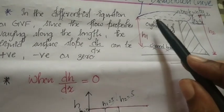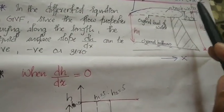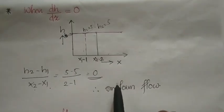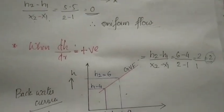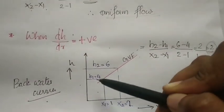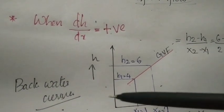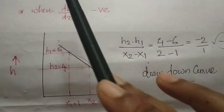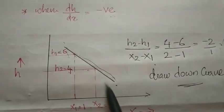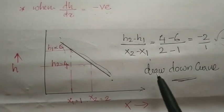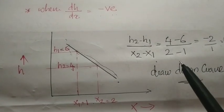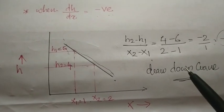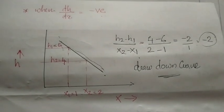The profile of rising water on the upstream side of a dam is called the backwater curve. When dh/dx equals zero, depth is constant and flow is uniform. When dh/dx is positive, water rises on the upstream side of the dam — that profile is called the backwater curve. When dh/dx is negative, the depth decreases in the direction of flow — that profile is the drawdown curve. A drawdown curve usually occurs at the tail end, where flow decreases from a normal depth. That's all for today's topic, thank you.